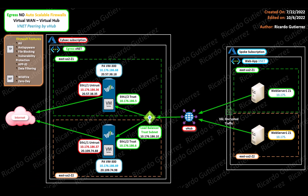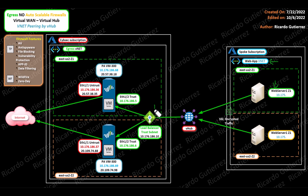Now we'll go over the egress pattern. You have a web app VNet with a virtual machine that wants to communicate to the internet. There is a default route that points traffic via the virtual hub. The virtual hub's route table has a setting pointing the default route to the IP address of a Layer 4 load balancer. That load balancer sends the packet to either firewall, where it is inspected and then sent out to the internet. The firewalls live in Zone 1 and Zone 2 as well.